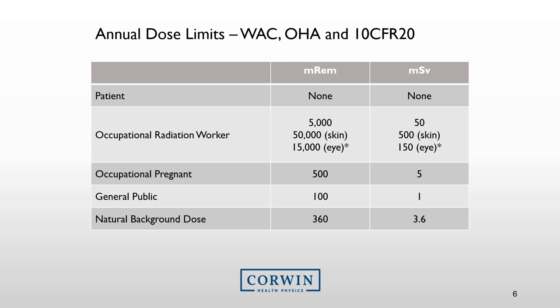If you are occupationally pregnant and have declared your pregnancy, the maximum dose you can receive is 500 millirem, typically limited to 50 millirem per month during the pregnancy. The general public — individuals who are not radiation workers — is limited to 100 millirem per year. To put this in context, the natural background radiation exposure in the United States is about 360 millirem per year, and most occupational radiation workers receive less than 360 millirem while working at their medical facility.